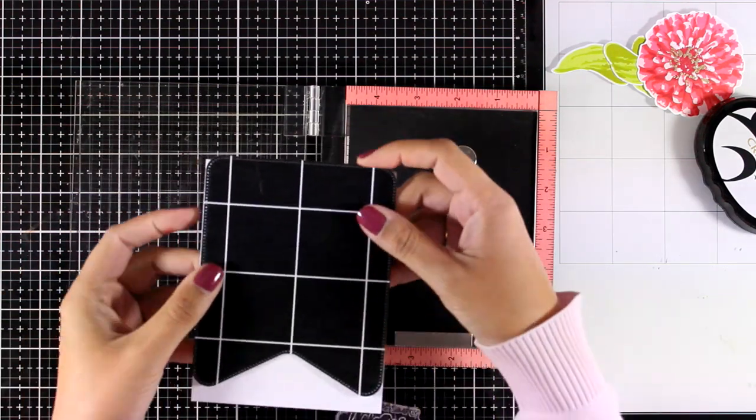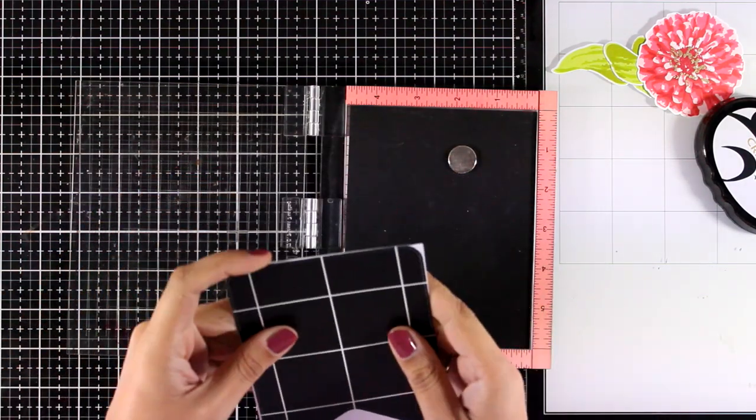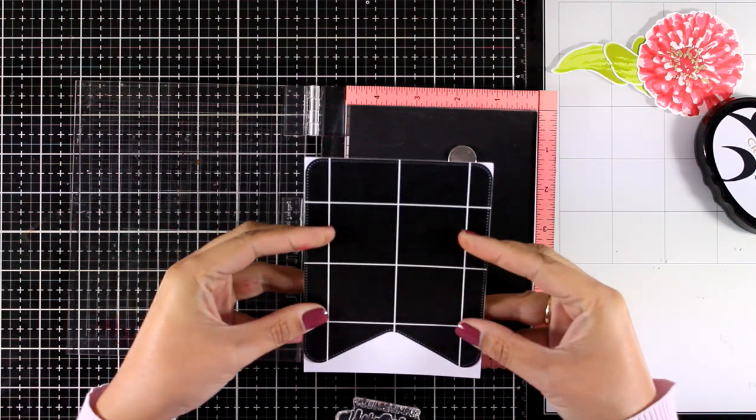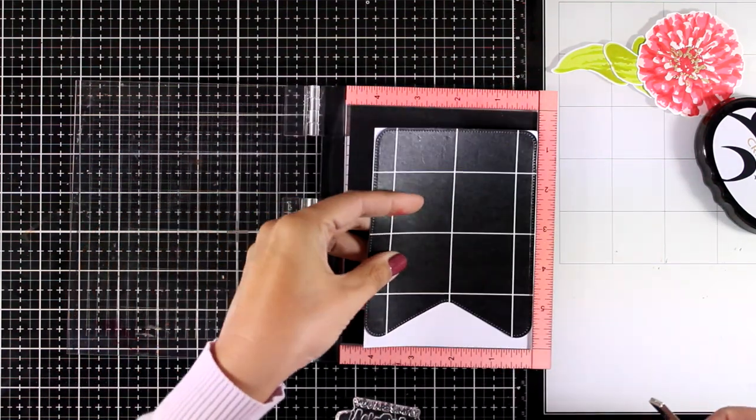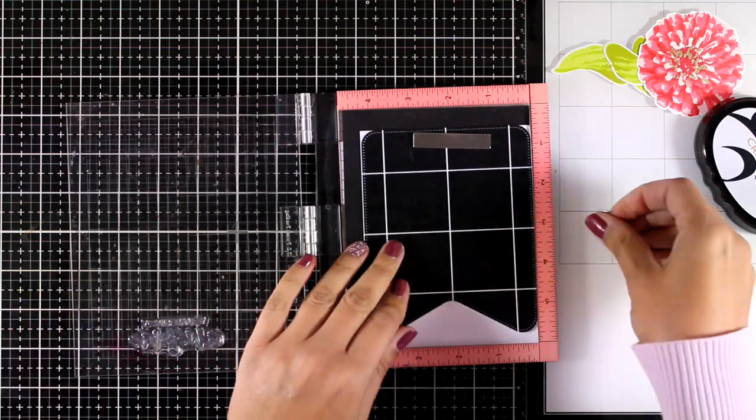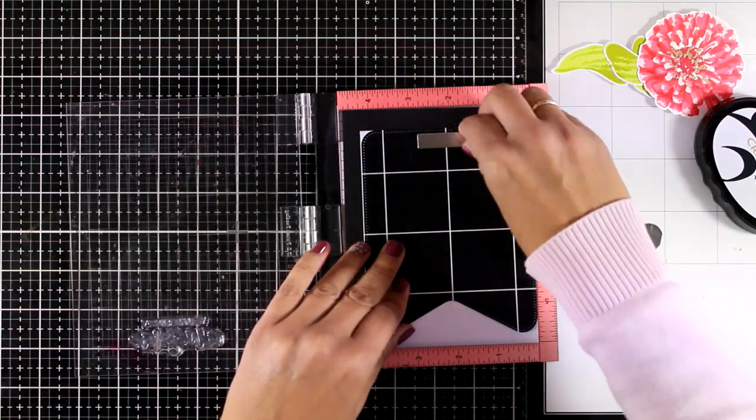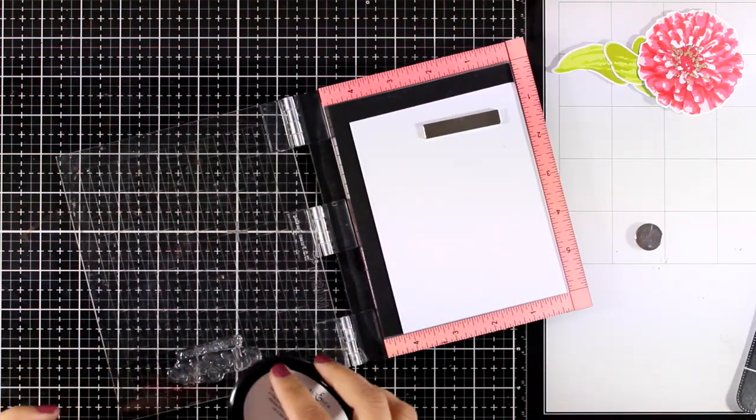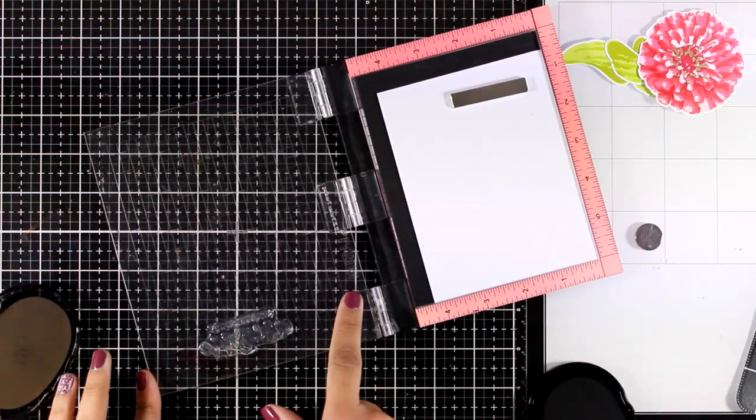I'm going to place the banner on top of a card base that's 4 1/4 by 5 1/2, making sure that it is flush at the top. This gives me a little area at the bottom where I'm going to stamp the sentiment. I'm using a sentiment from the same stamp set as the Zinnia flower, and I want to stamp in that little white triangle left down there the word Awesome.